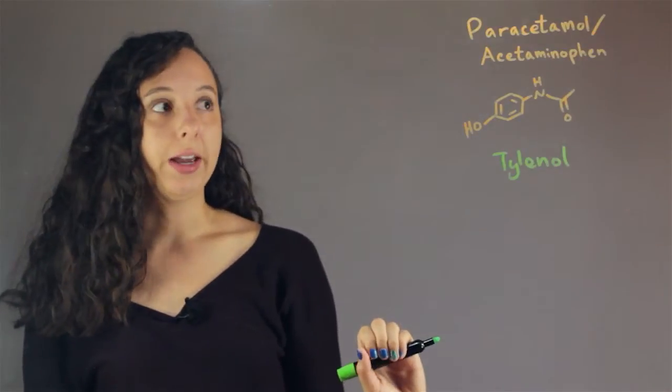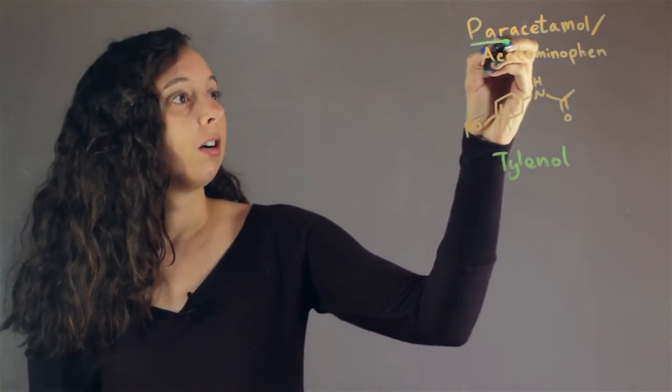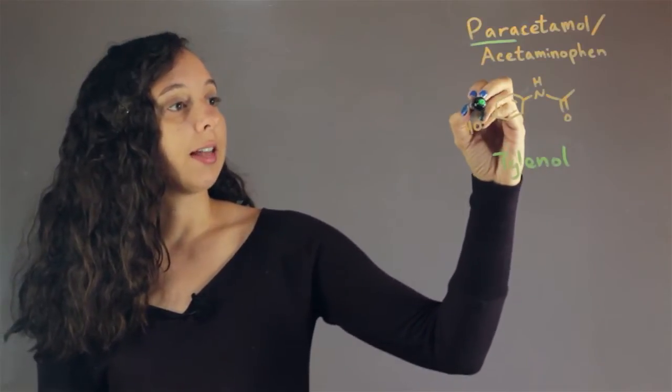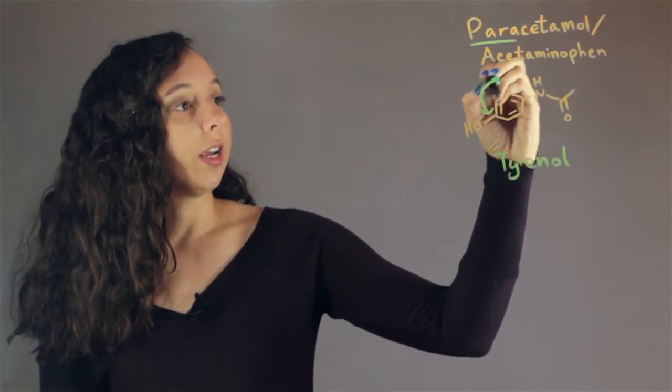And as just part of the naming, the prefix para refers to the fact that on our benzene ring, we have two things and they're exact opposite of each other, so at locations one and four.